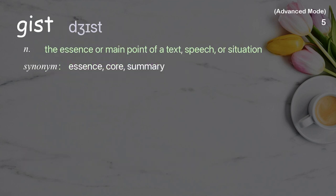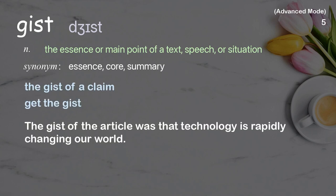Gist: The essence or main point of a text, speech, or situation. Examples: The gist of a claim. Get the gist. The gist of the article was that technology is rapidly changing our world.